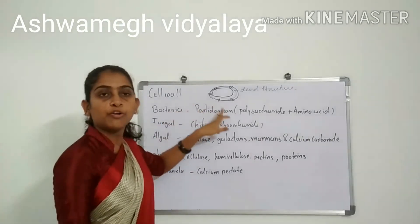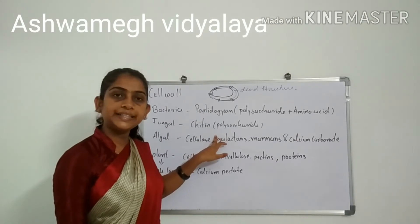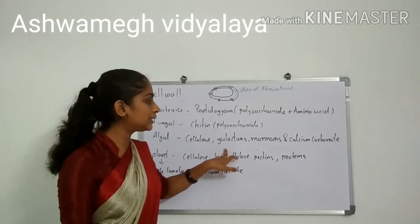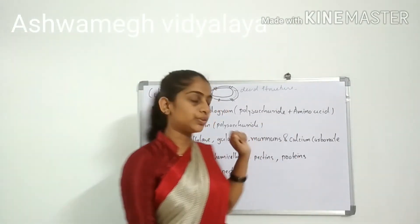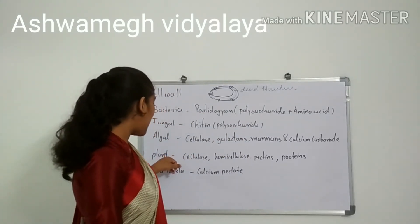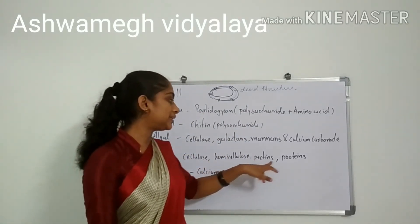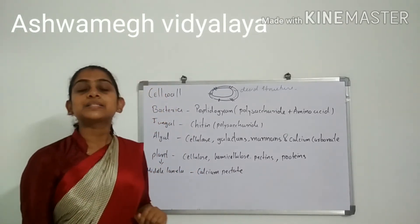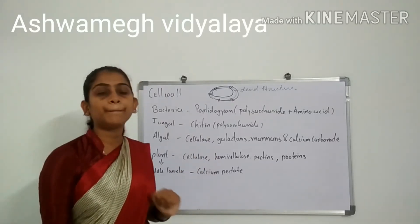To summarize: bacterial cell wall is made up of peptidoglycan. Fungal cell wall is made up of chitin. Algal cell wall is made up of cellulose, galactans, manans, and minerals like calcium carbonate. Plant cell wall is made up of cellulose, hemicellulose, pectins, and proteins. The plant middle lamella is made up of calcium pectate.